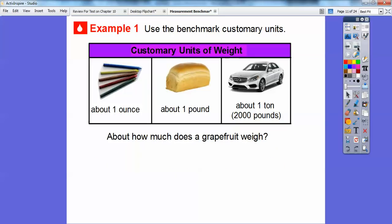Here's another one. So here we have customary units of weight. Five colored pencils weigh about an ounce. A loaf of bread weighs about a pound. A car weighs about a ton. A ton is 2,000 pounds.